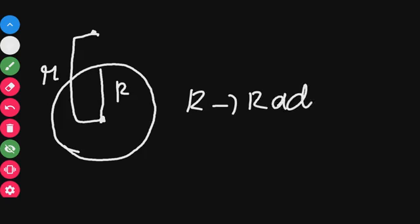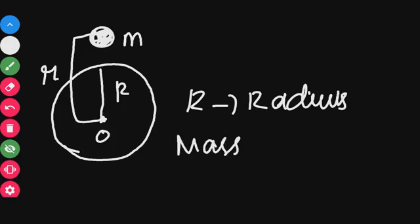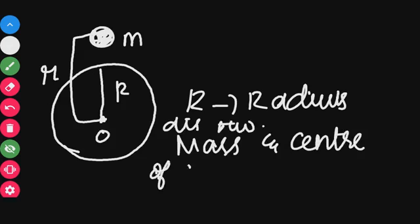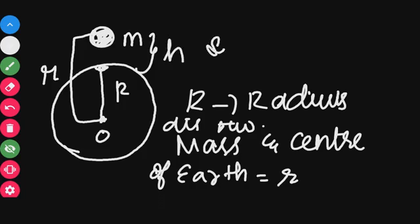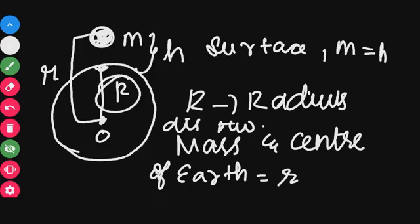R is the radius of the Earth. At a point, you have a mass. The distance between the mass and the center of the Earth is shown. This height H is the distance between the mass and the surface of the Earth.